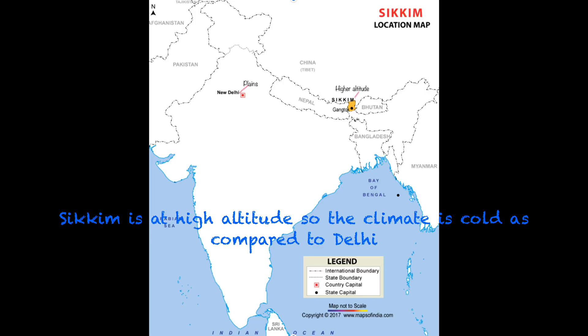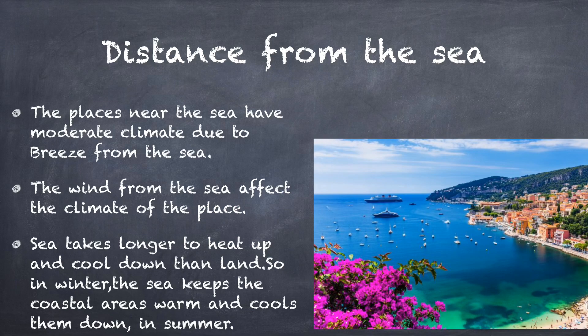Places near the sea have a moderate climate due to the breeze from the sea. The wind from the sea affects the climate of the place. The sea takes longer to heat up and cool down than land, so in winter the sea keeps the coastal area warm, and cools it down in summer.